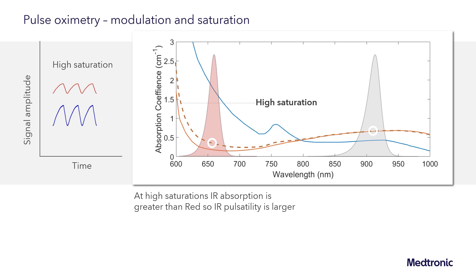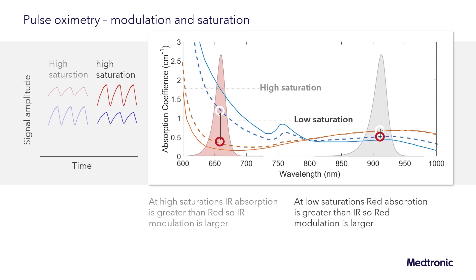Going back to the absorption spectra of blood, at high saturation where the blood is primarily oxygenated, we have low red absorption — resulting in a low percent modulation of the red — and higher infrared absorption, giving a higher percent modulation of the infrared. As that blood desaturates and goes to lower saturations, the red absorption increases, resulting in a stronger modulated signal and a higher percent modulation, while the infrared signal decreases, resulting in a lower percent modulated signal.